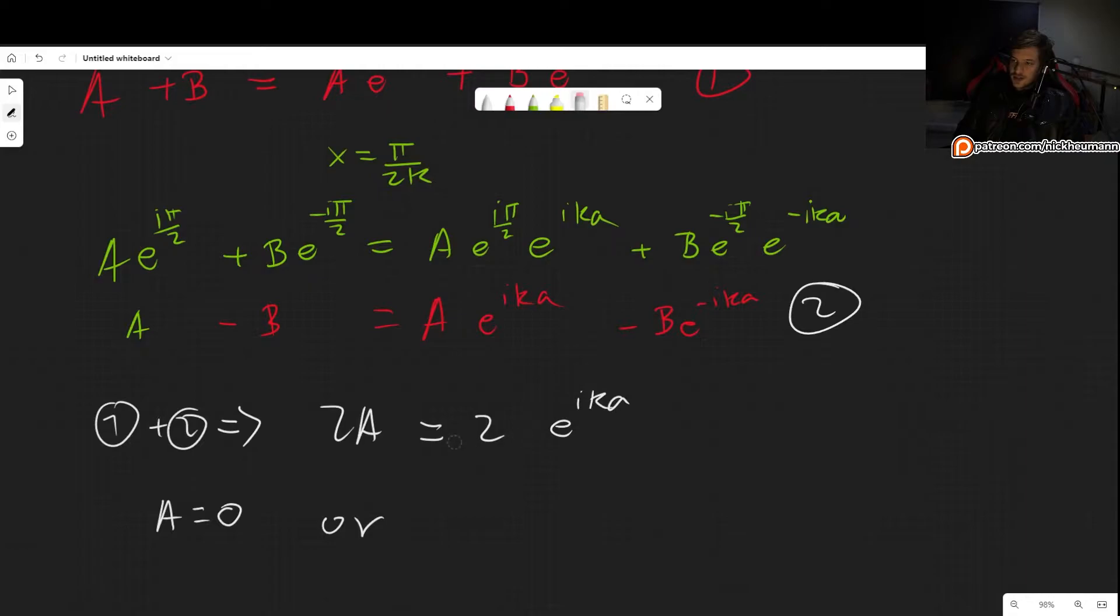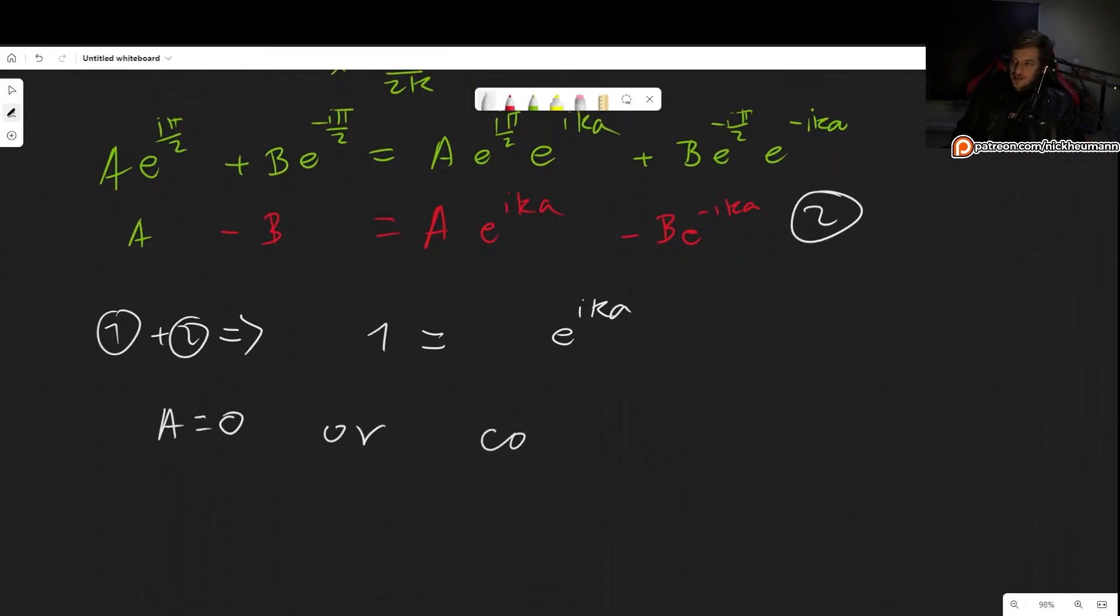For this to hold, either A equals 0, in which case we get a trivial answer 0 equals 0, or, dividing by A and by 2, we get 1 equals e^(ika). And for that to hold, this basically means cosine(ka) + i·sine(ka) has to equal 1. So we need this to be equal to 0 and this to be equal to 1. So that happens if ka equals 2nπ, with n just any integer. This can be 0, plus or minus 1, plus or minus 2, and so on.